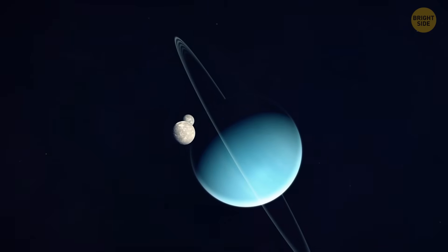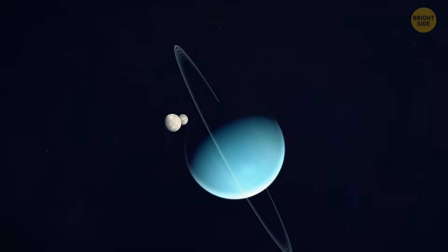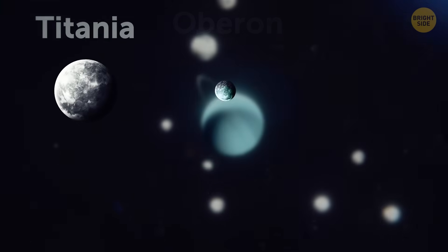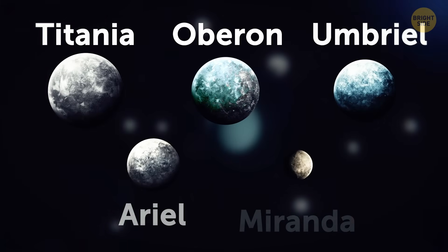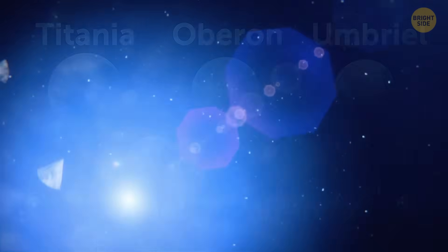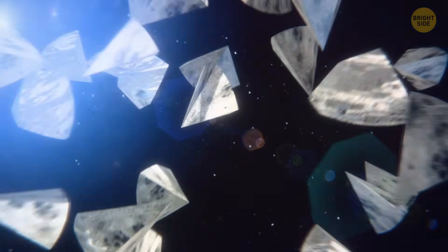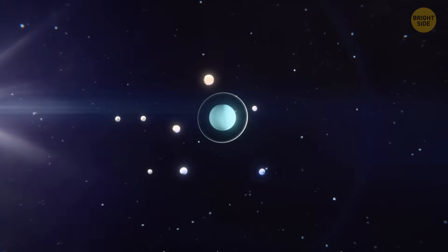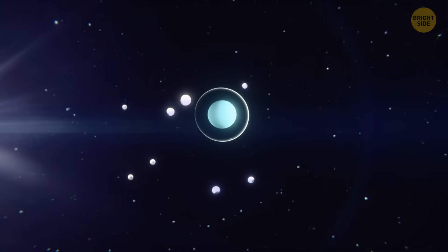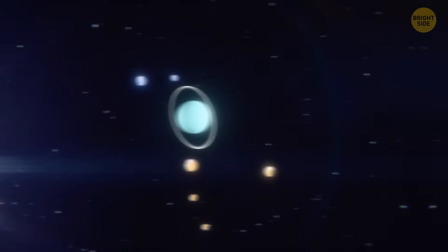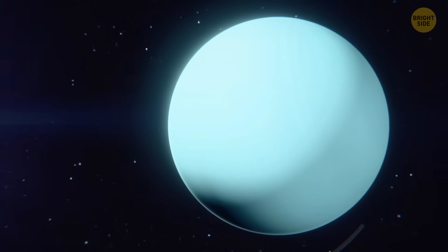But you could see its beautiful moons. Uranus has 27 known moons, with the largest being Titania, followed by Oberon, Umbriel, Ariel, and Miranda. These moons are thought to have formed from the same material that formed Uranus. And yes, the tilt affects them too. They orbit around the planet perpendicular to the planet's motion around the sun.